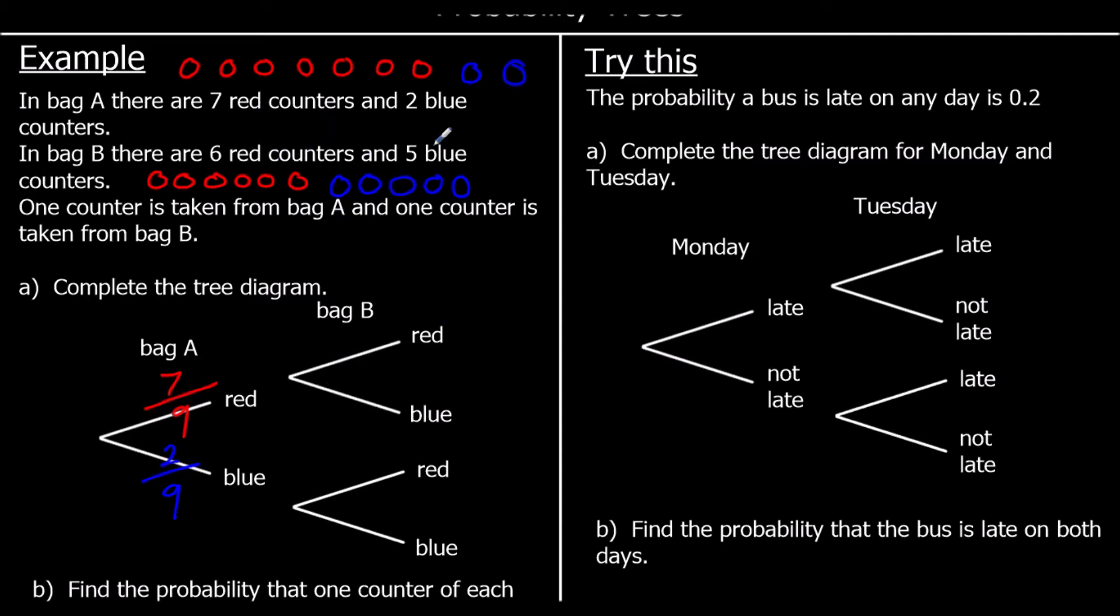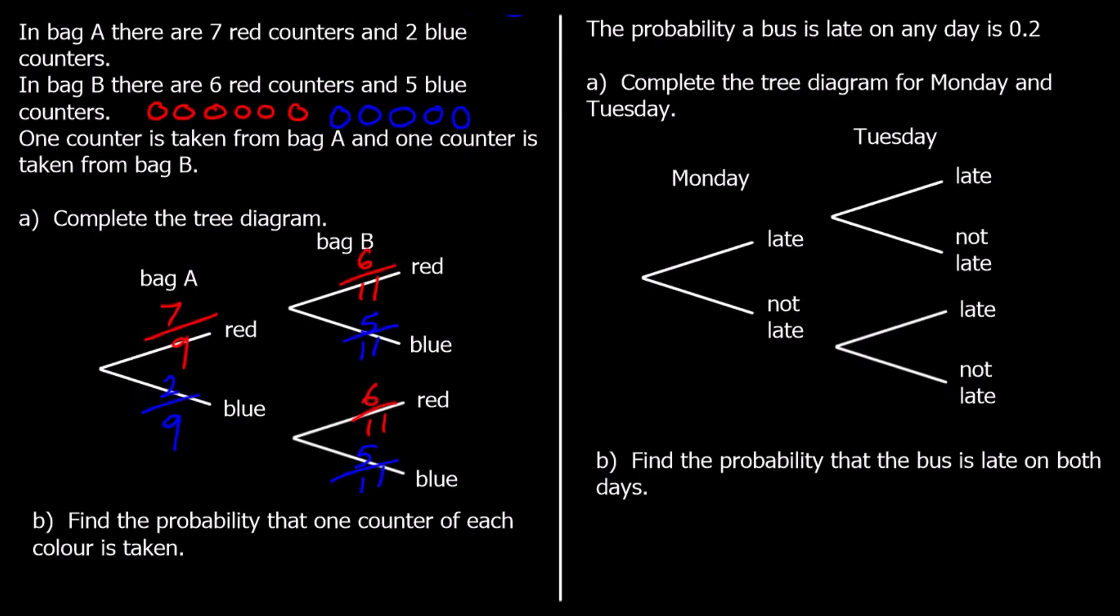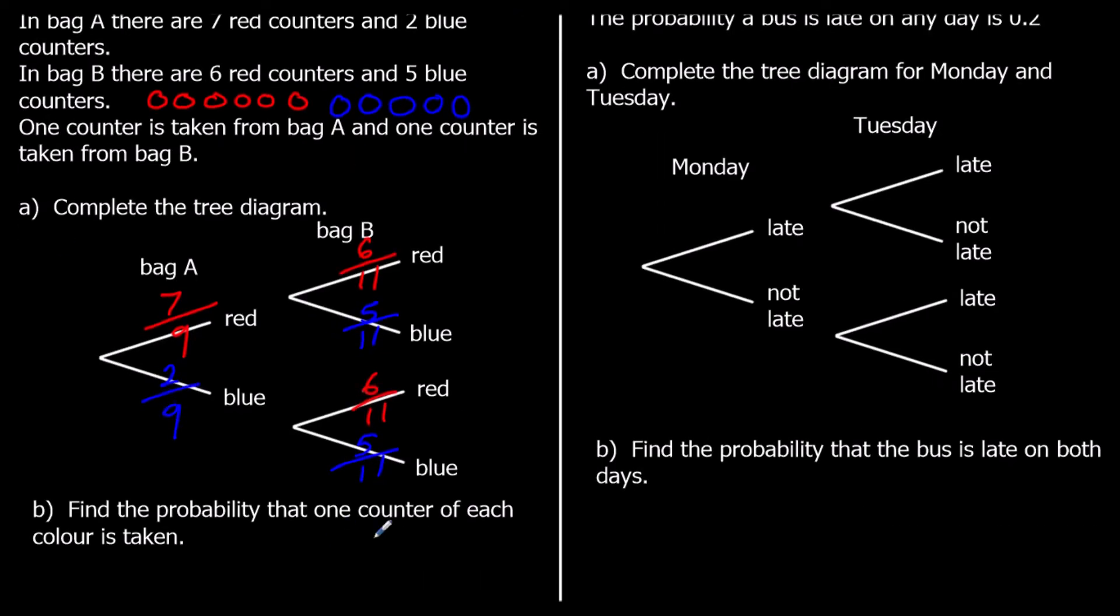So there are 6 red and 5 blue. What's the probability of getting a red? So there's 6 red out of 11 in total, so 6 elevenths. So the chance of getting a red in bag B is 6 elevenths. It's not affected by if we got a red or a blue from bag A. The probability of getting a blue in bag B is 5 elevenths. There are 5 blue out of 11 in total. So that's our tree diagram completed.